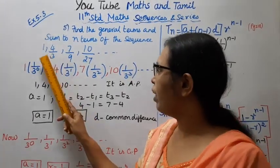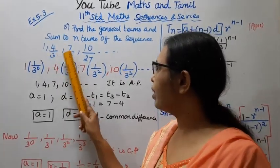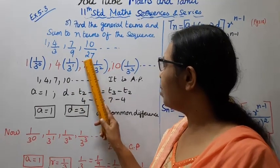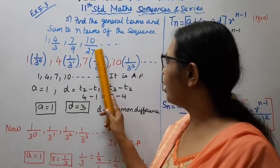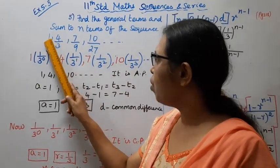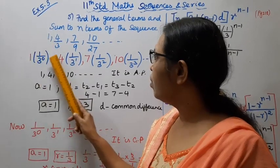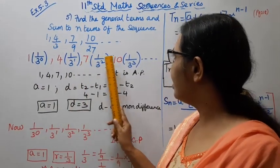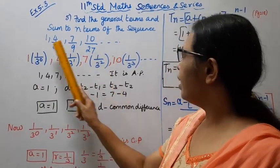Looking at the sequence 1, 4/3, 7/9, 10/27: the numerators are 1, 4, 7, 10.